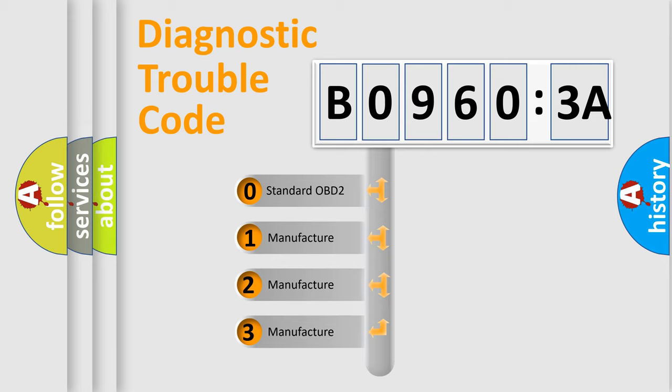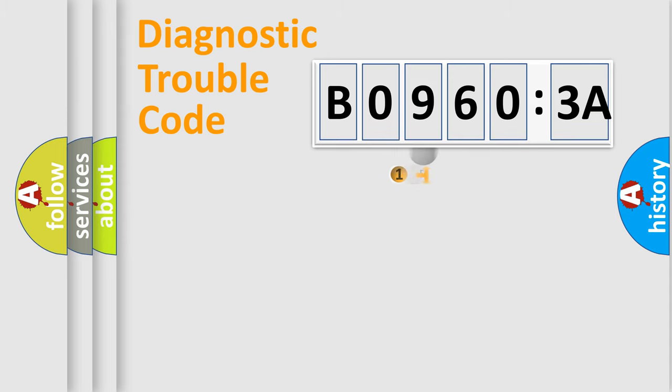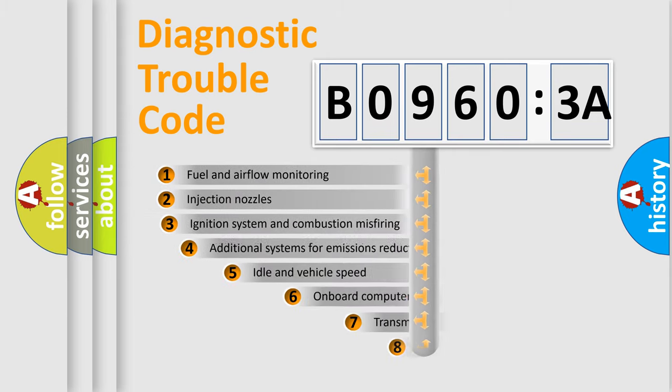If the second character is expressed as zero, it is a standardized error. In the case of numbers 1, 2, 3, it is a more prestigious expression of the car-specific error.